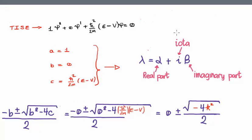So now we have lambda. We know that lambda is equal to plus or minus the square root of minus 4k squared over 2.